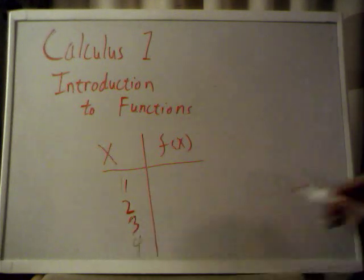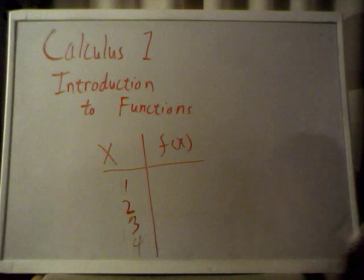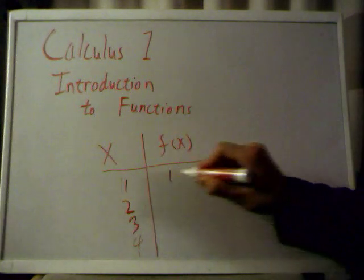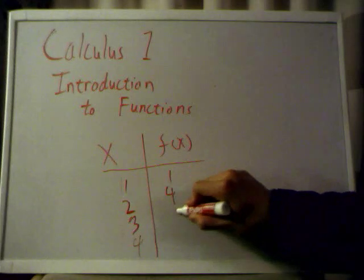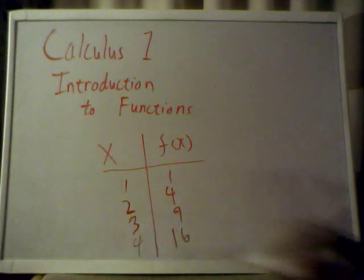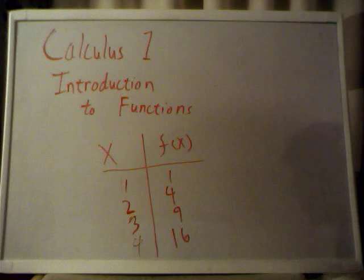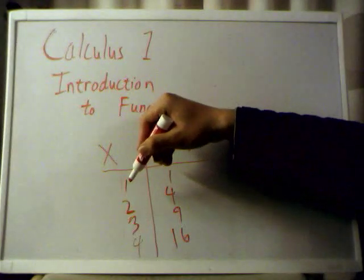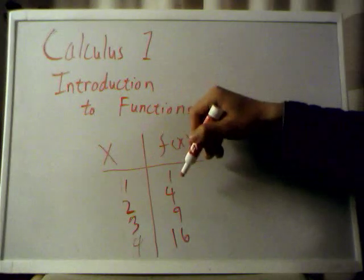And then it does some sort of black magic to the set of numbers, and then it spits out 1, 4, 9, and 16. So, effectively, it took this set of numbers, and then it made it into this set of numbers.